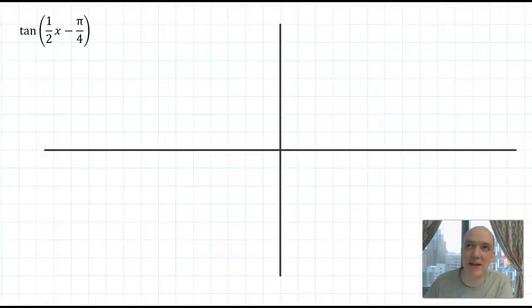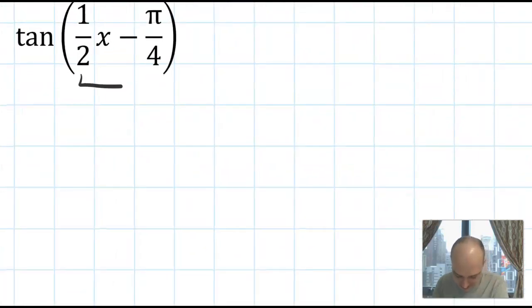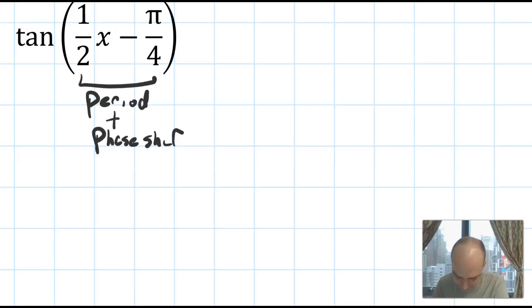Last graph for today. We're going to look at tangent of 1/2 x minus π/4. So this is one of those graphs that's a period change and a phase shift. When we have graphs like this, we want to approach it like we approach sine and cosine graphs with a period change and phase shift. We're going to find the start and end of a period and plot those out. So we're going to do some algebra before we start graphing.